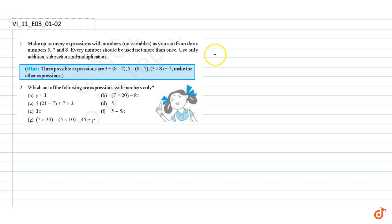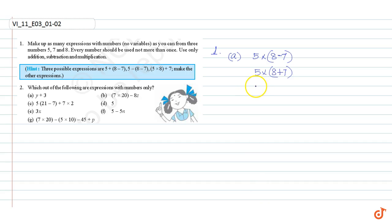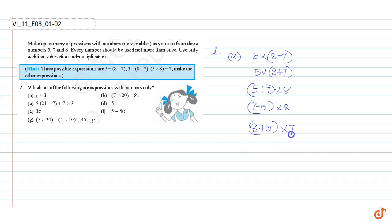We can make many possible expressions using the numbers 5, 8, and 7. Some expressions are: 5 into 8 minus 7, 5 into 8 plus 7, 5 plus 7 into 8, 7 minus 5 into 8, 8 plus 5 into 7, 8 minus 5 into 7. These are some of the expressions for question number one.